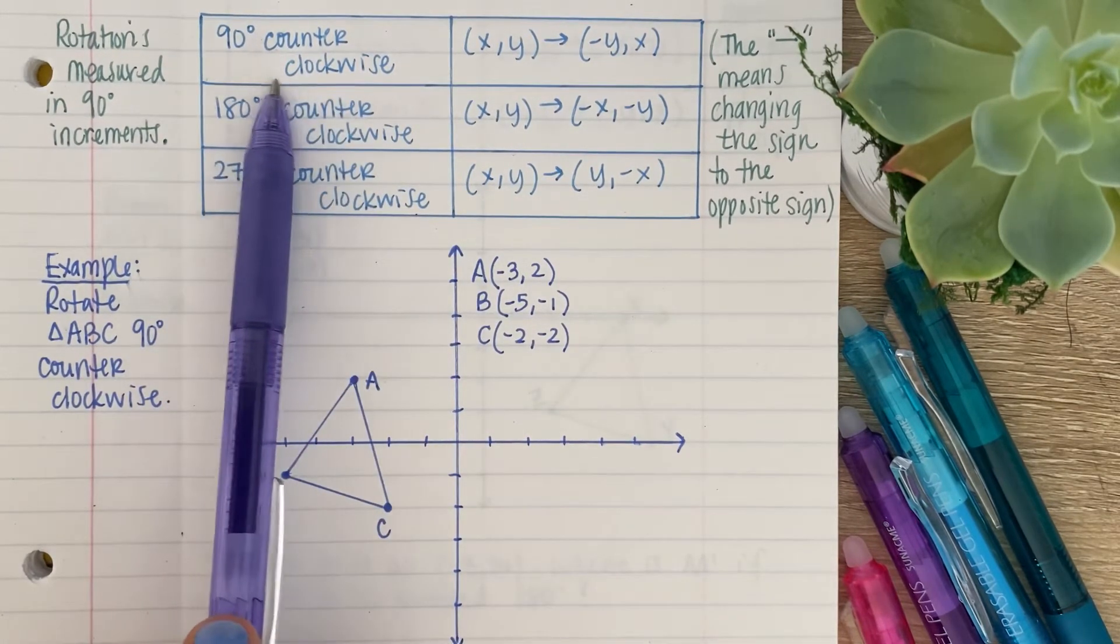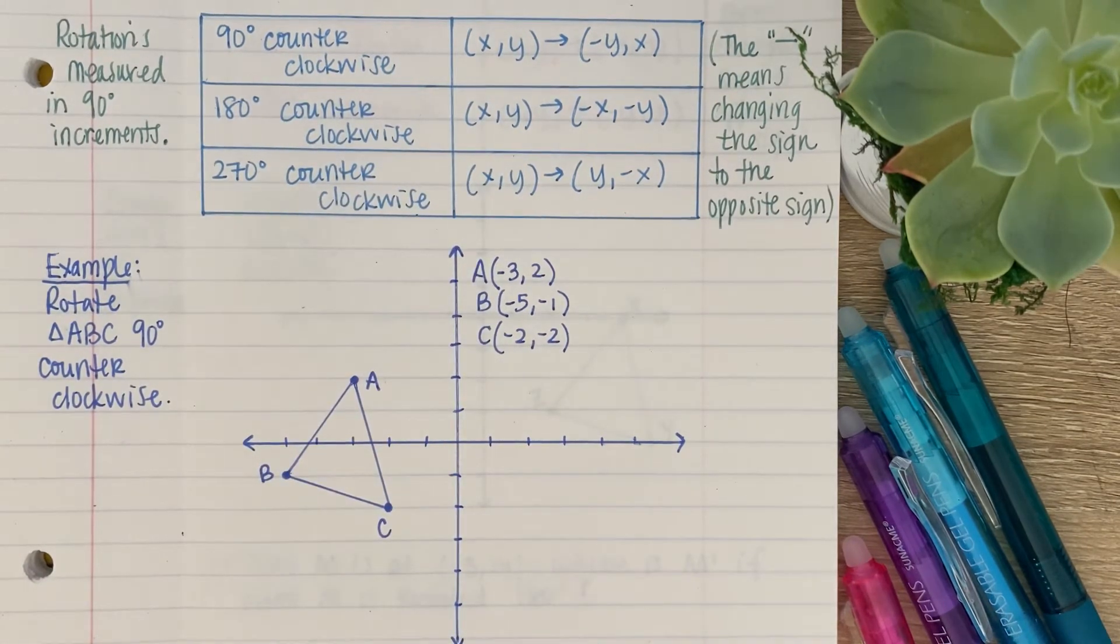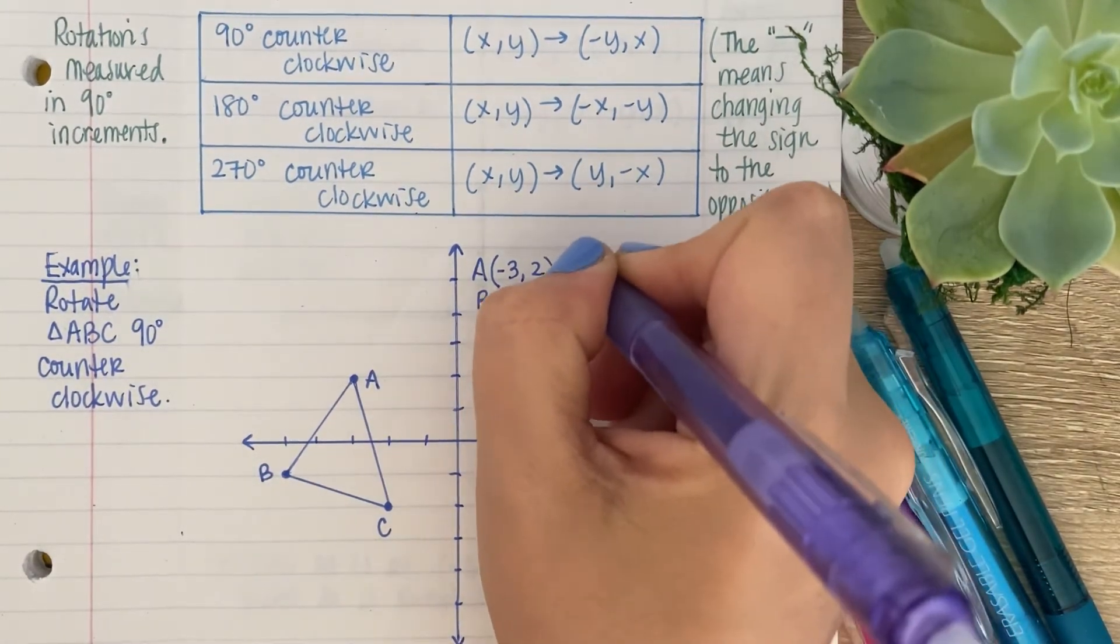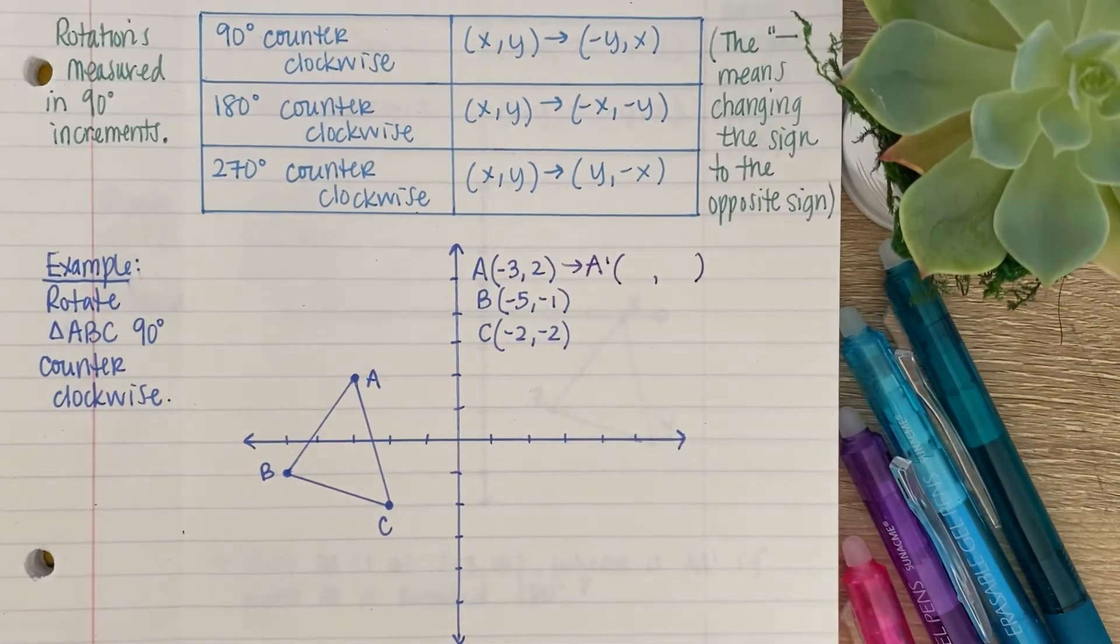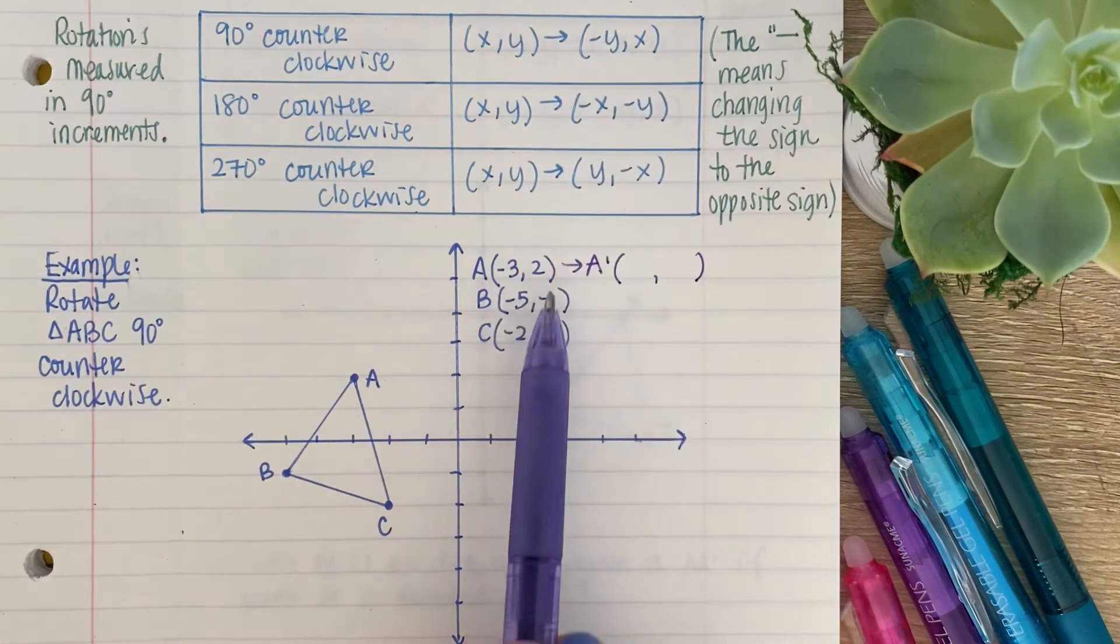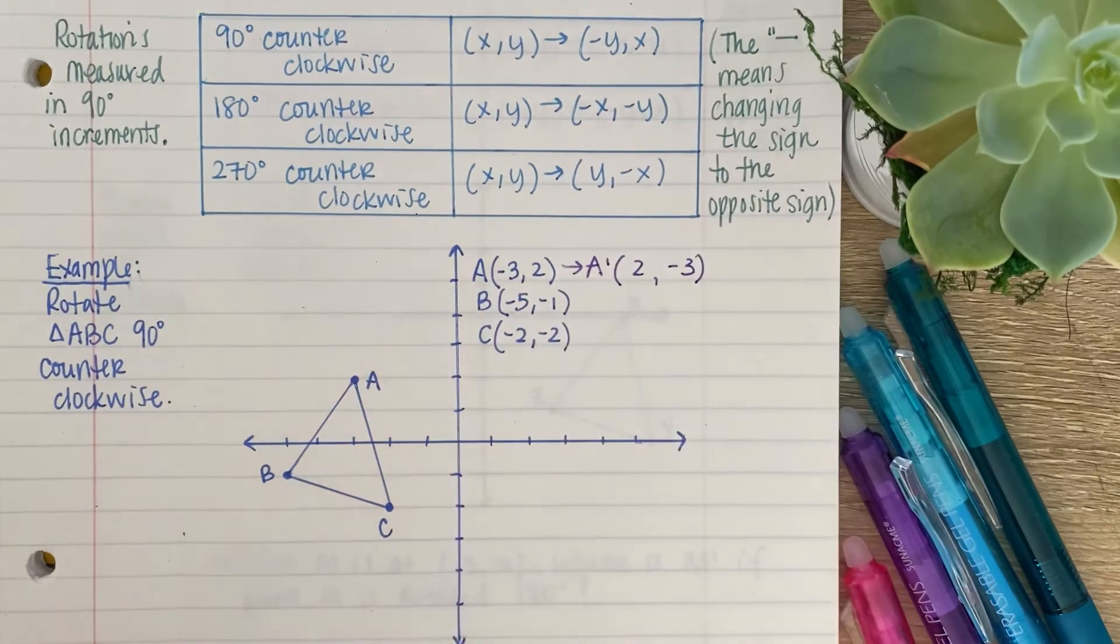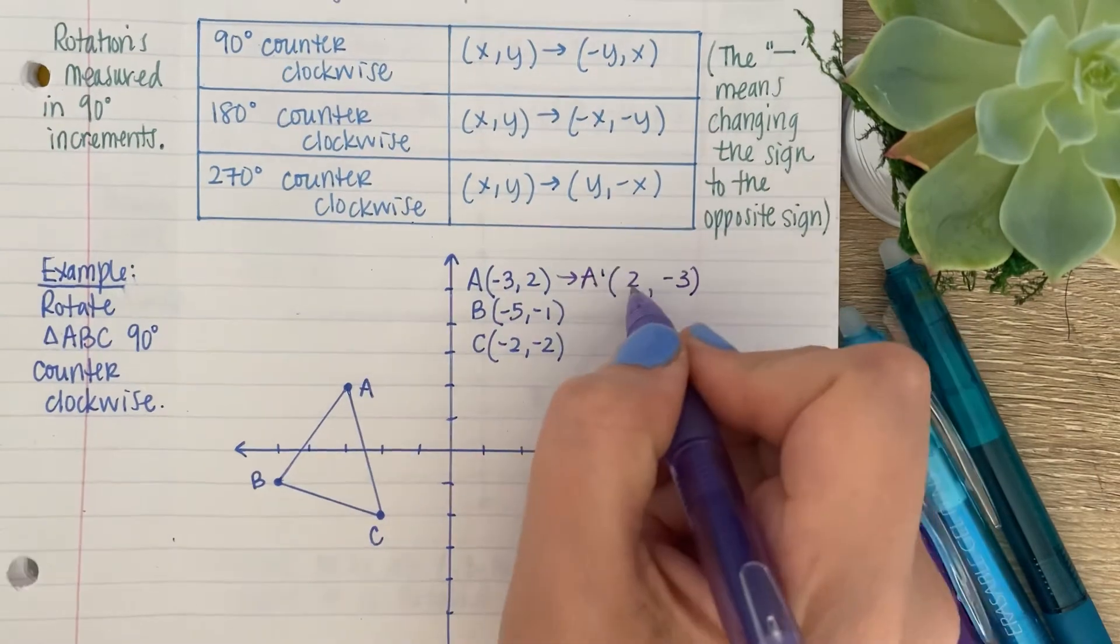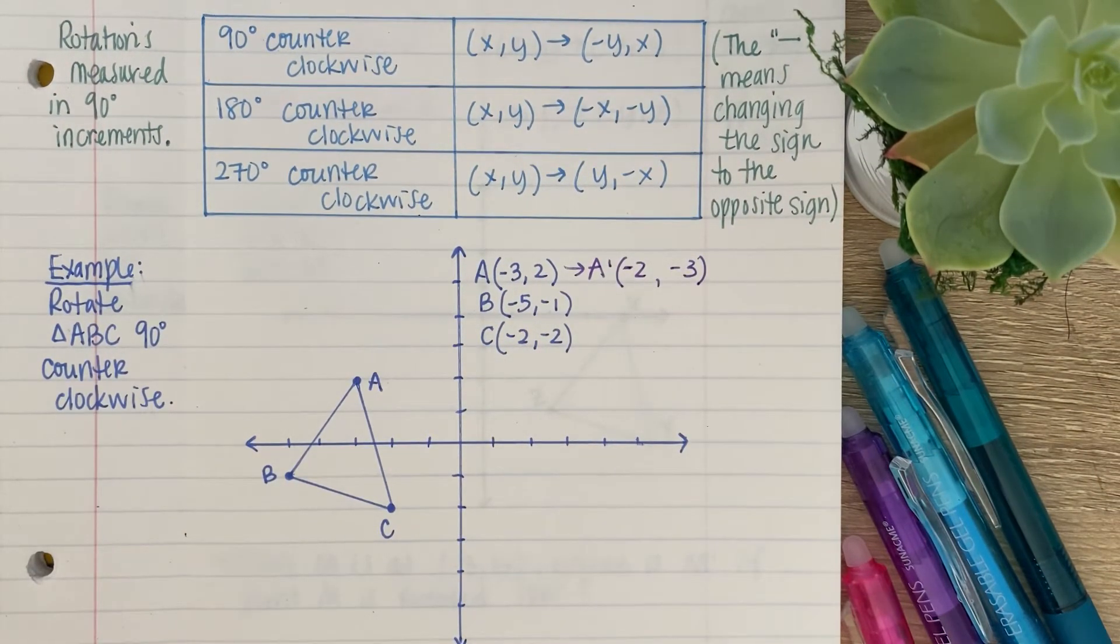So, 90 degrees. You look up here. 90 degrees counterclockwise. What do I do with my ordered pairs? Well, you have to take, so let's see where A prime will be. Here I drew out what my point should look like. So, you flip the numbers. So, let me go ahead and flip those. So, I have 2, -3. But then, I have to change the sign on this one. So, this positive 2 becomes (-2, -3).